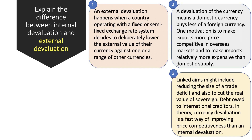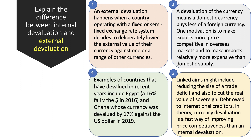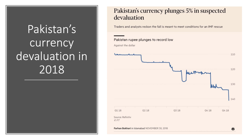In theory, a devaluation of the currency is a quick way of improving competitiveness — certainly quicker than internal devaluation — but it also carries some downsides. Good examples: Egypt devalued by 16% against the US dollar in 2016; Ghana devalued by 17% against the US dollar in 2019; and Pakistan has been devaluing their rupee against the US dollar, with a 5% fall in November 2018.